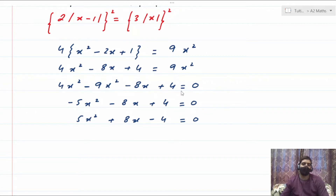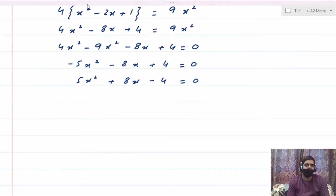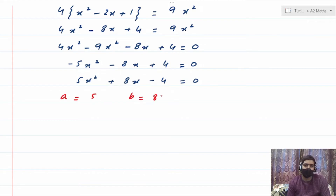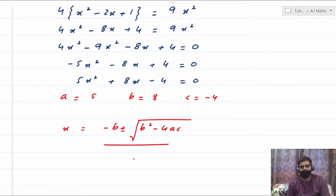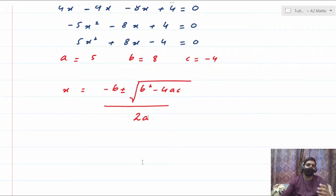After squaring both sides and rearranging, you're left with a quadratic equation. You can solve it by making factors if possible, otherwise apply the quadratic formula. The value of a is 5, b is 8, and c is −4. Hit it on the calculator inserting the coefficients a, b, c to get the two values of x directly.